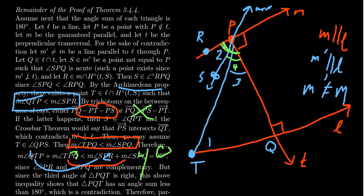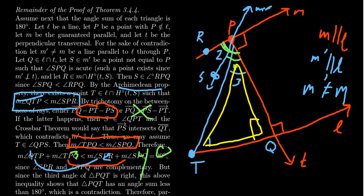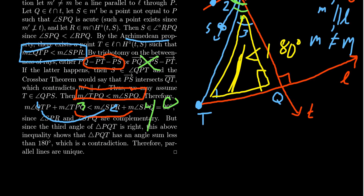If we look at triangle PQT, we know angle Q is a right angle. By assumption, all triangles have an angle sum of 180 degrees. So we have 90 degrees already accounted for, but angles one and three sum to strictly less than 90 degrees — meaning the total angle sum is strictly less than 180 degrees. This is a contradiction: we can't have a triangle whose angle sum differs from 180 degrees. Because of the contradiction, we couldn't have a second parallel line, so M prime must intersect L. This gives us a unique parallel line — the Euclidean Parallel Postulate.